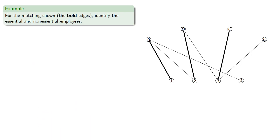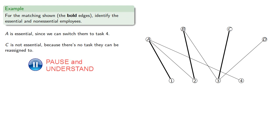Now it's important to understand that the distinction between essential and non-essential is whether or not we can switch. And so let's consider another graph. So here A is essential because we can switch them to task 4. C is not essential because there's no task they can be reassigned to. Now how about B?